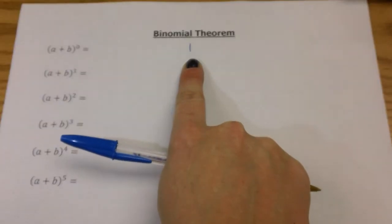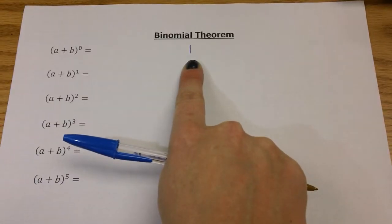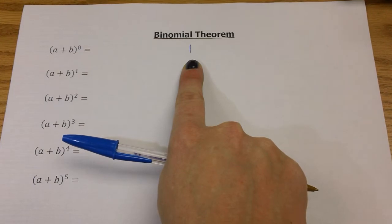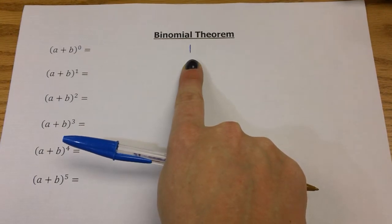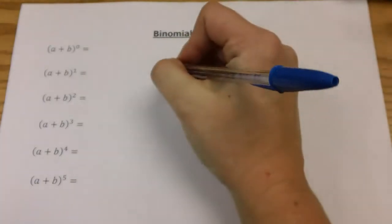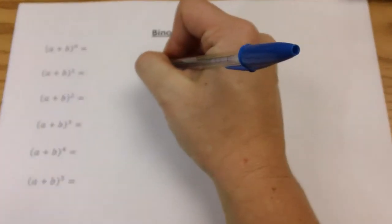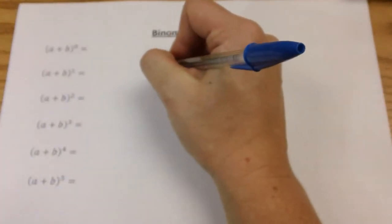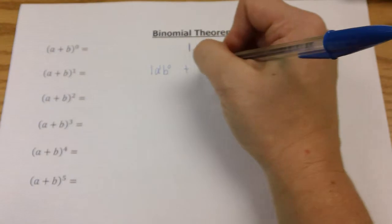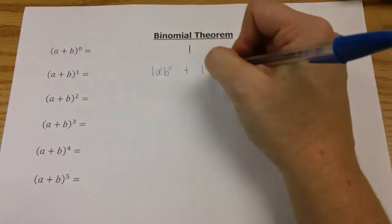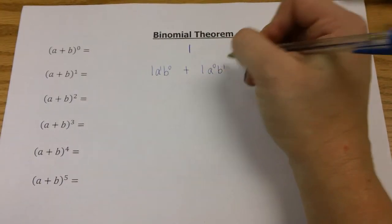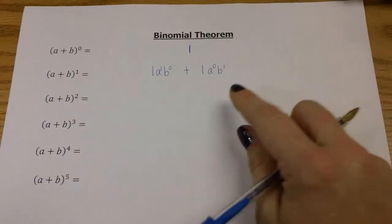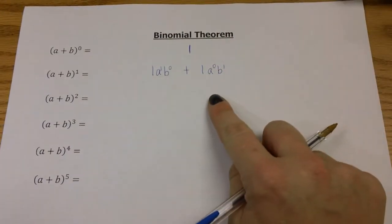When we have a plus b to the first power, we know that is going to be a plus b. I'm going to rewrite this as one times a to the first, b to the zero, plus one times a to the zero, b to the first, which is still equivalent to a plus b.